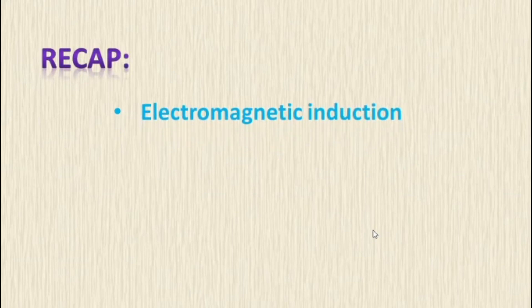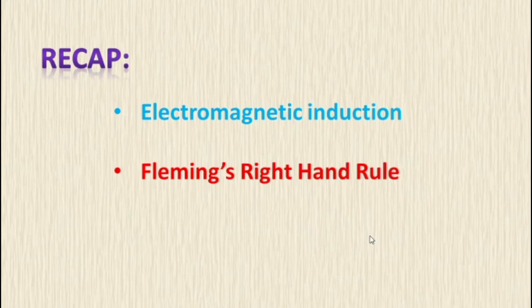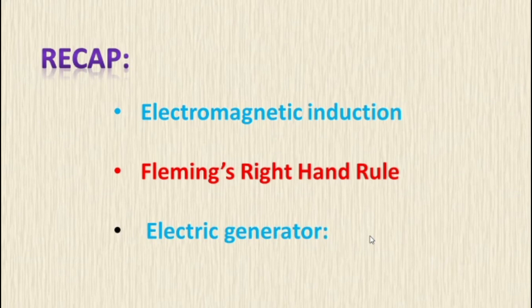So, what did we study today? First, we studied electromagnetic induction: whenever there is a change in the magnetic flux linked with a closed circuit, an EMF is produced and the amount of induced EMF varies directly as the rate at which the flux changes — this EMF is known as induced EMF, and this phenomenon is called electromagnetic induction. Next, we studied Fleming's right hand rule: stretch the thumb, forefinger, and middle finger of the right hand mutually perpendicular to each other — the forefinger indicates magnetic field direction, the thumb indicates conductor motion, and the middle finger indicates induced current direction. Lastly, we studied the electric generator, which contains two types: AC generator and DC generator. Thank you, students.